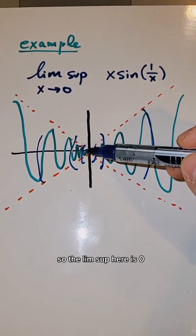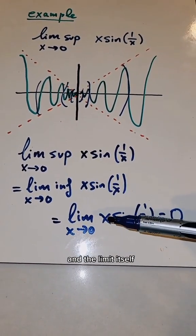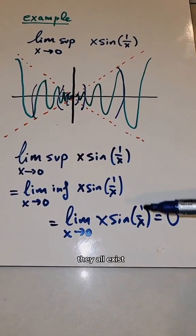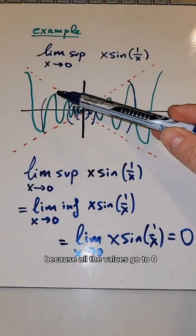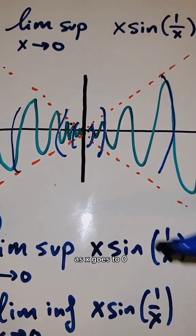So the limsup in here is zero. So in this case, the limsup, the liminf, and the limit itself, they all exist and they are zero because all the values go to zero as x goes to zero.